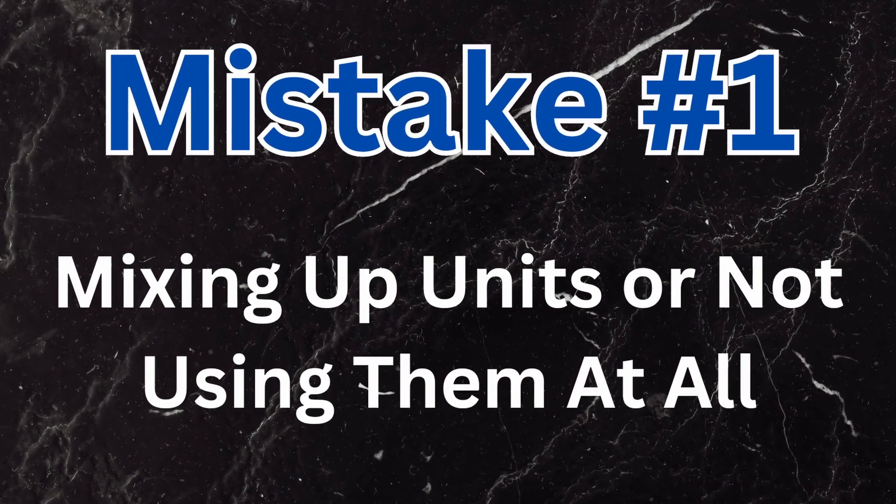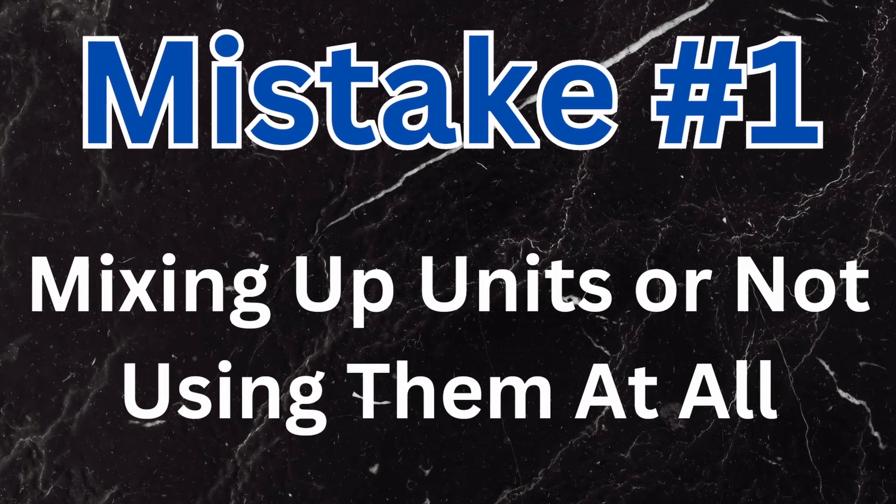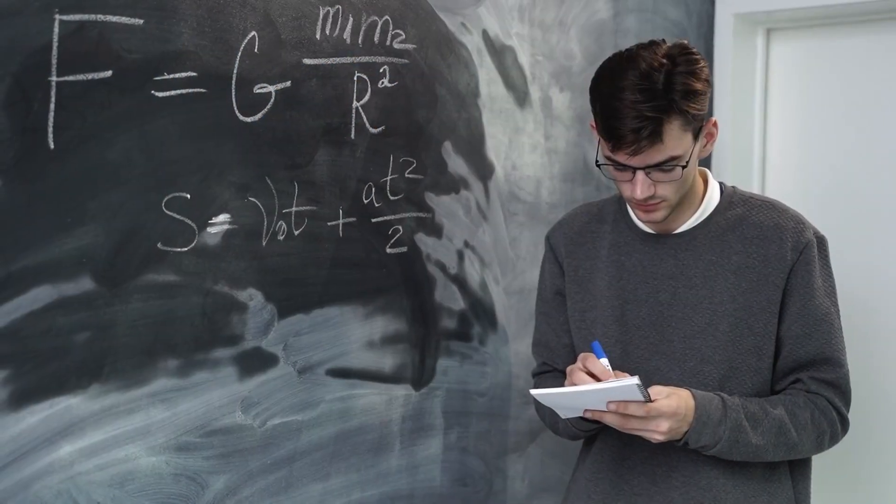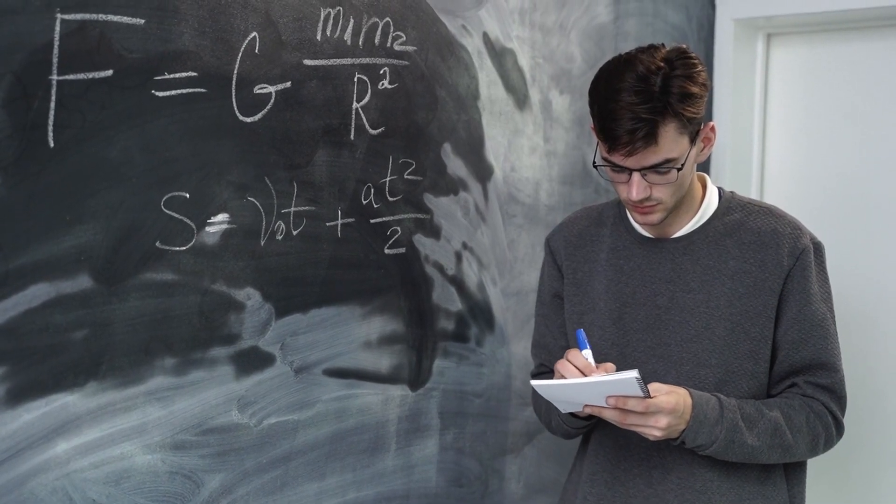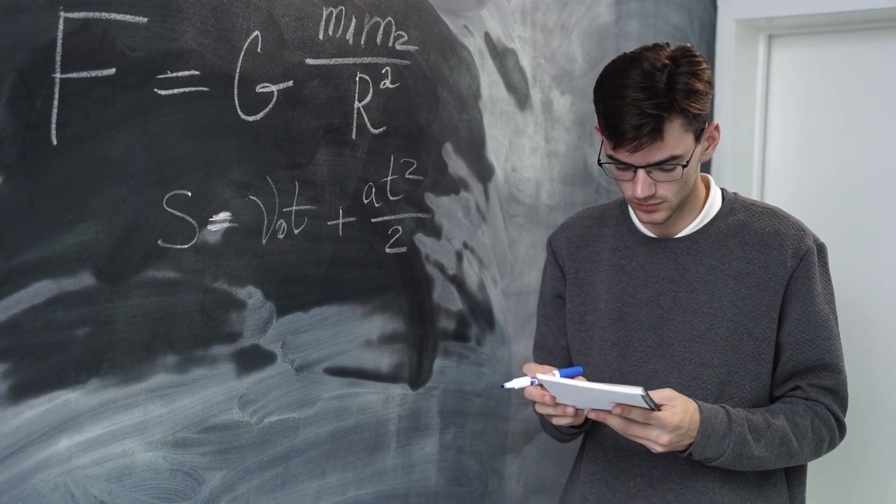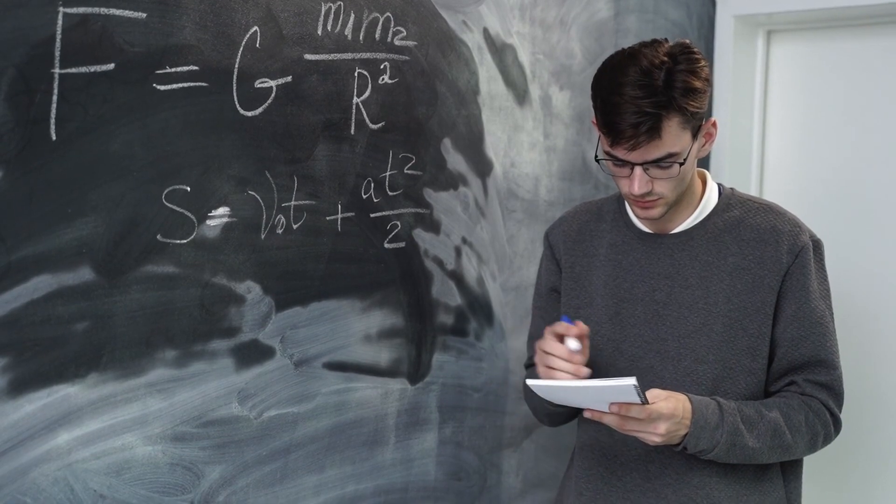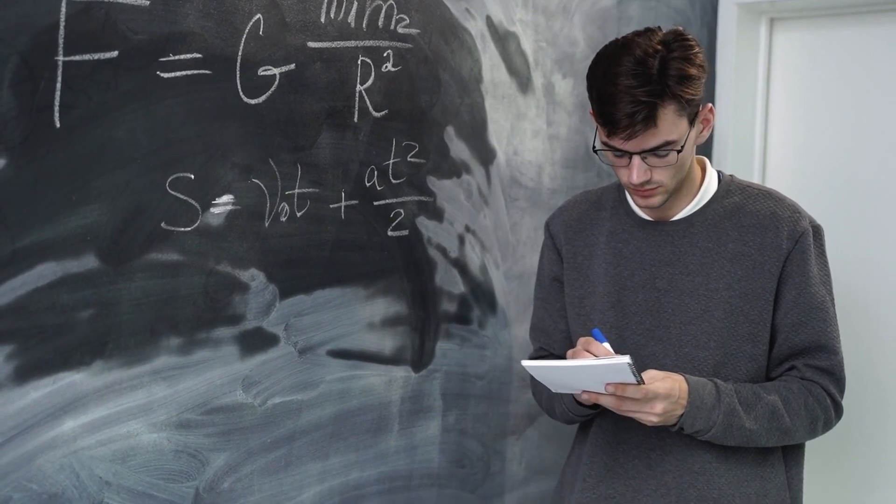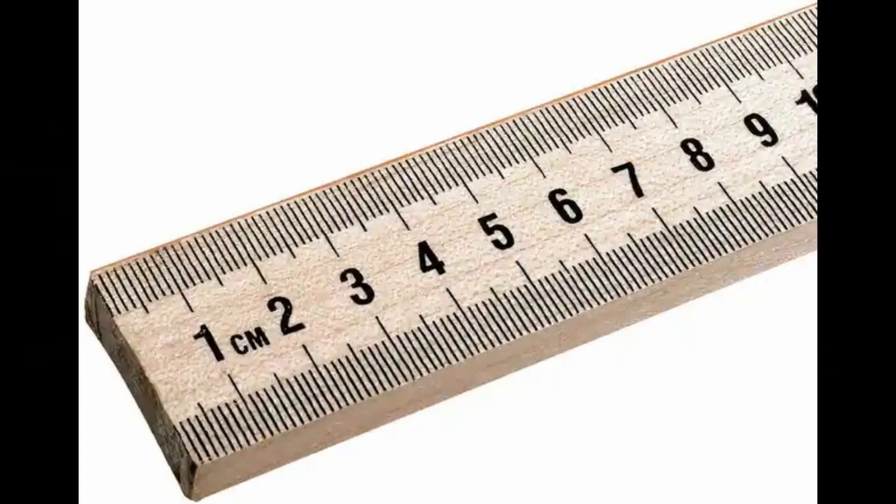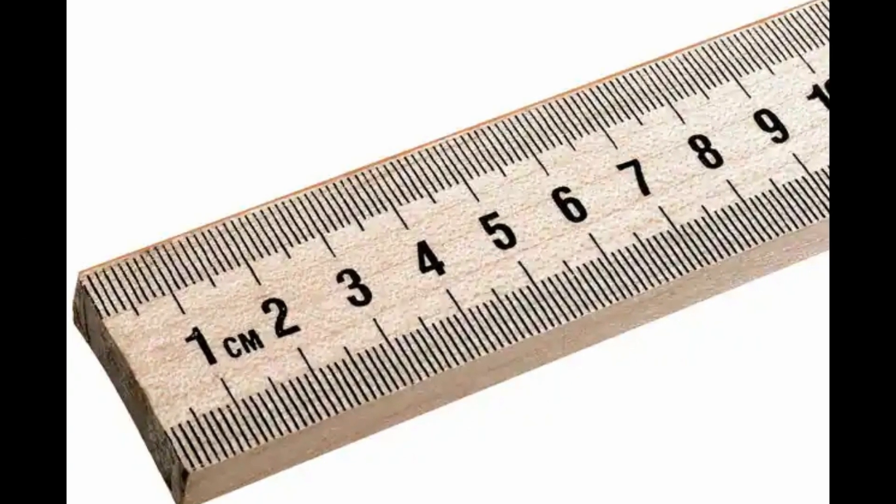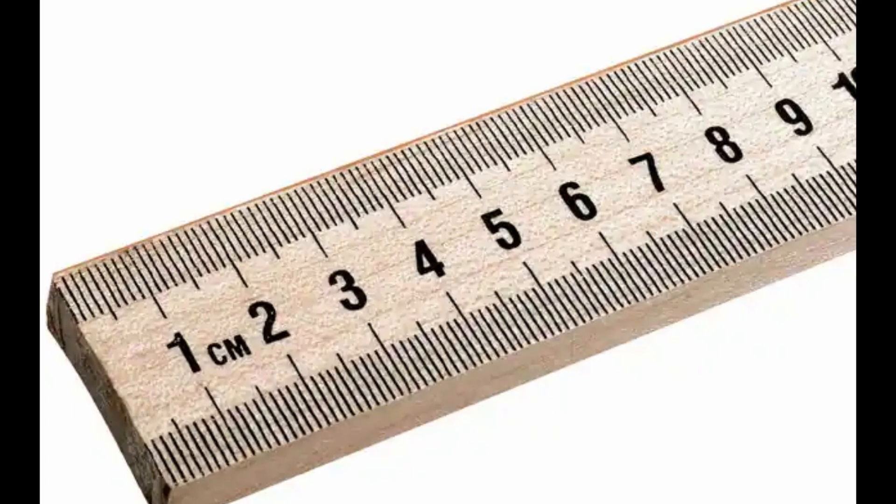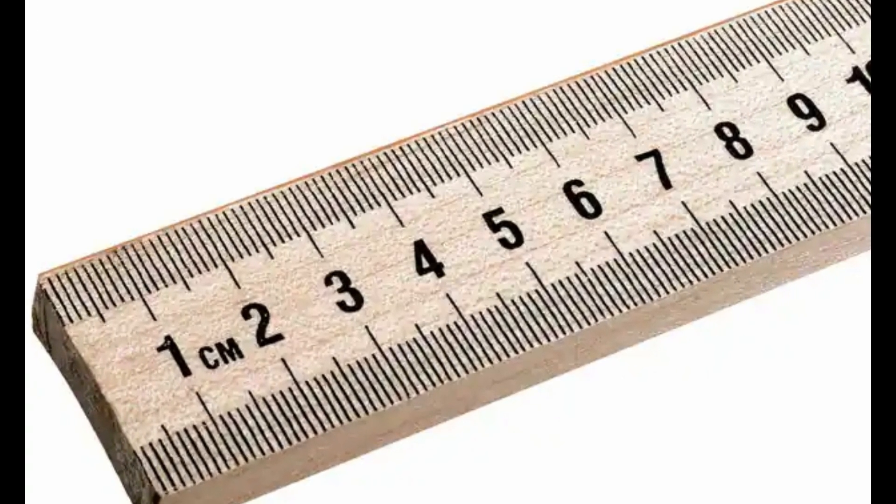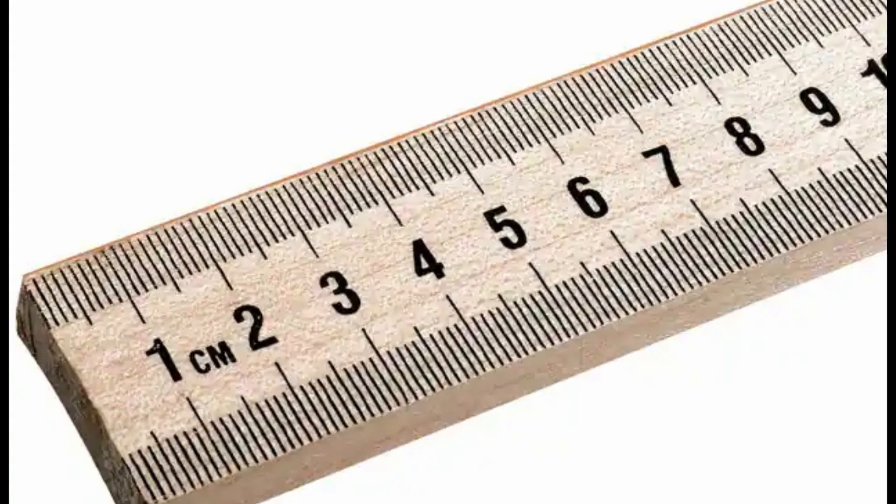First up, number one: mixing up units or not using them at all. One of the most common mistakes physics beginners make is not properly using units or just forgetting them entirely. It's crucial to always keep track of units and convert them properly when necessary. For example, I see this all the time in the lab when students use meter sticks. Meter sticks are in centimeters. You need to convert your measurements to the proper SI base units before doing any calculations.